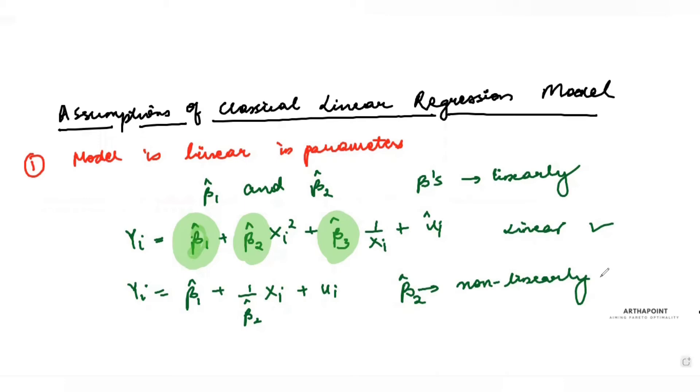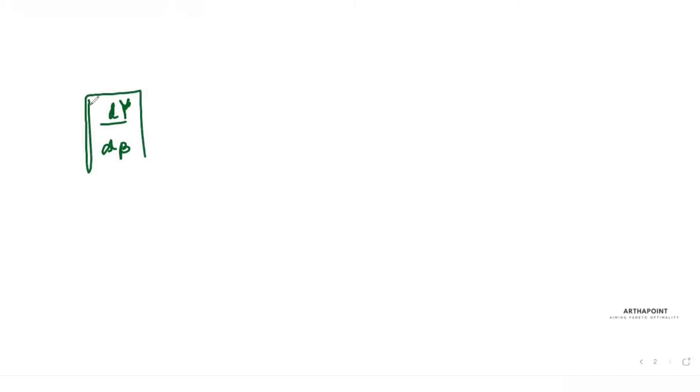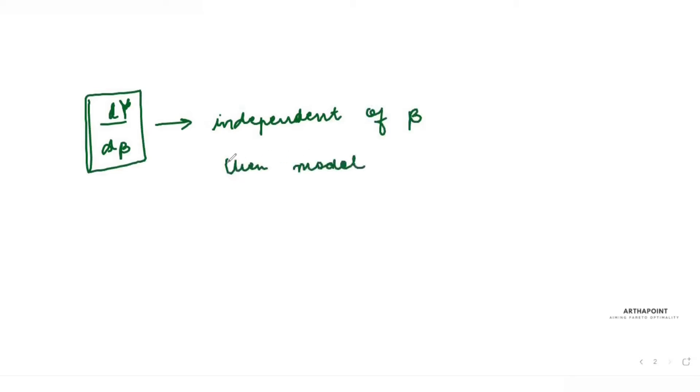Now let's see how you can check if the model is linear or non-linear. All that you should do is find out dy/dβ — differentiate with respect to β1 hat, β2 hat, β3 hat. Whenever you find dy/dβ, if this value is independent of β, then the model is definitely a linear model.